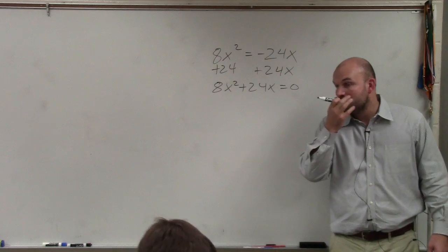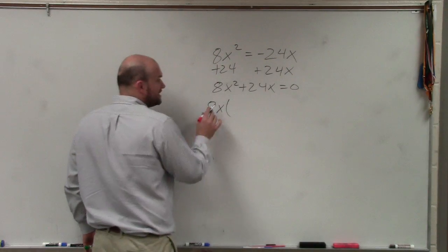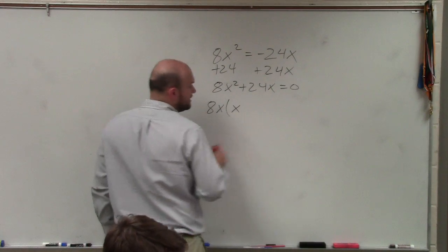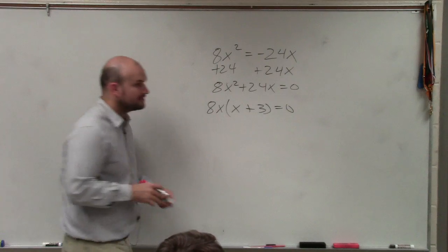Anybody want to offer up? Yes? 8x. 8x. So 8x is your greatest common factor, because 8x divides into 8x squared x times, and it divides into 24 three times, right?